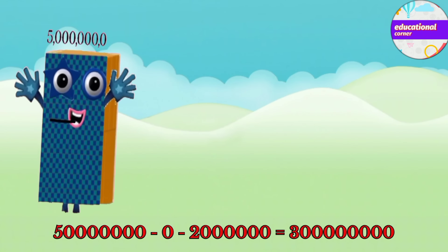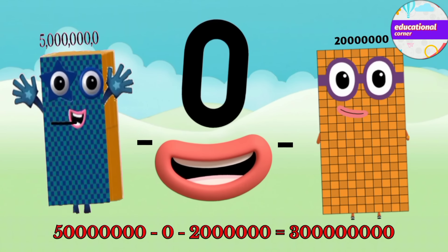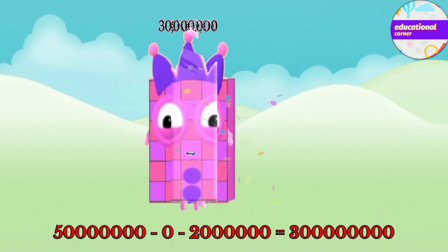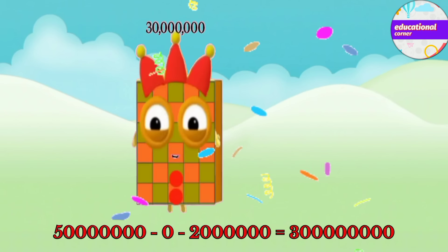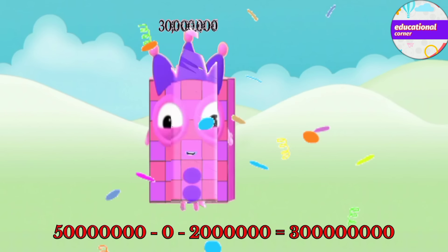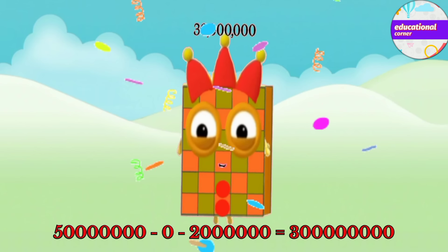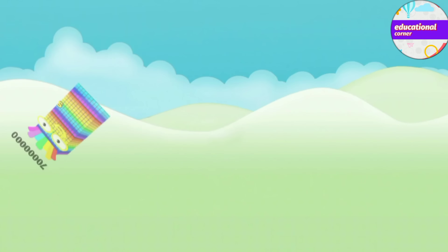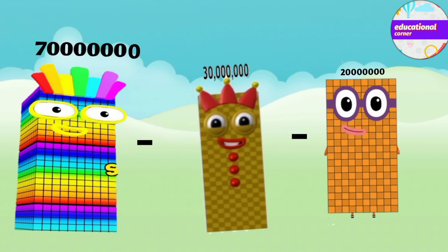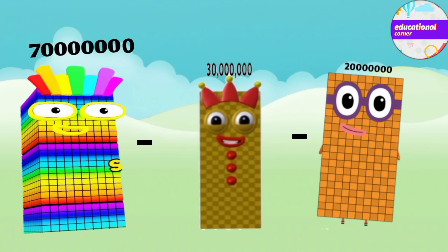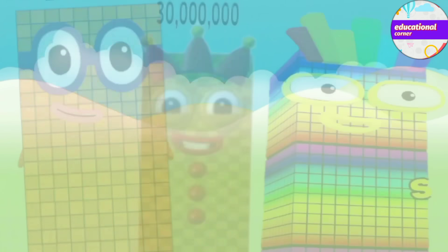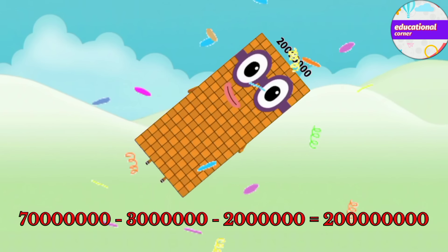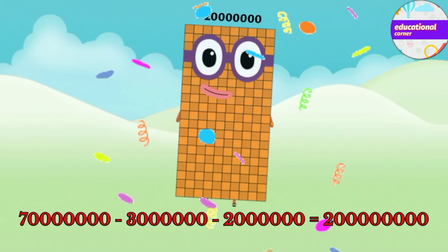50,000,000 minus 0 minus 20,000,000 equals 30,000,000. 70,000,000 minus 30,000,000 minus 20,000,000 equals 20,000,000.